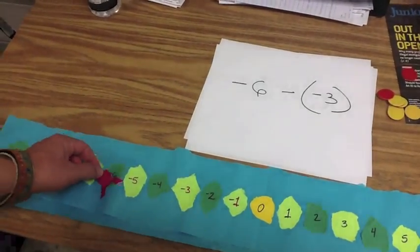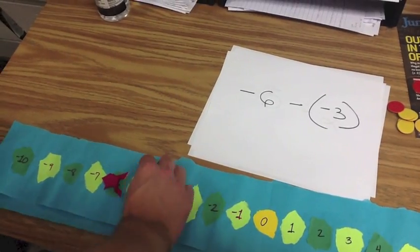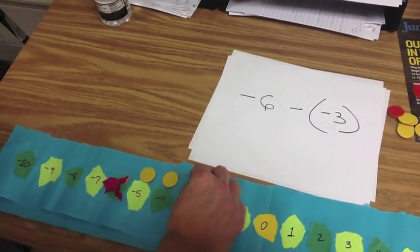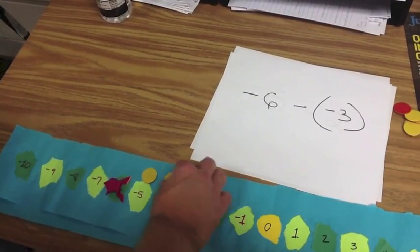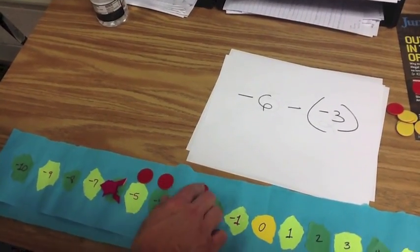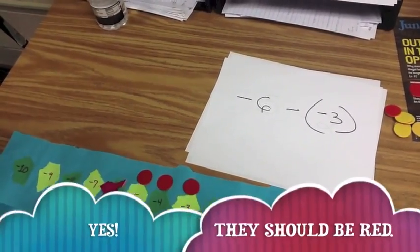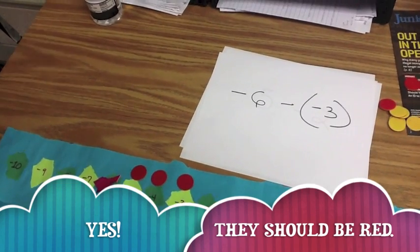Okay. So we're starting out with negative six. It's still a sad frog, but now it's jumping backwards three. So we're going to move it one, two, three. Now I haven't been very consistent with the counters here. Should they be red? Red. Yes. We'll go with red.